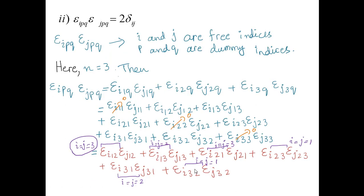The second identity involves epsilon_ipq times epsilon_jpq.